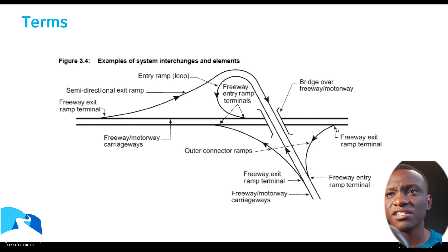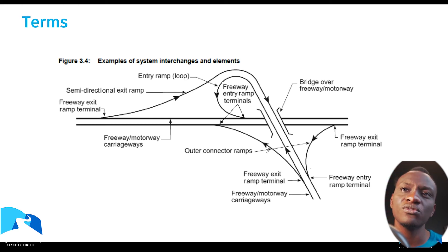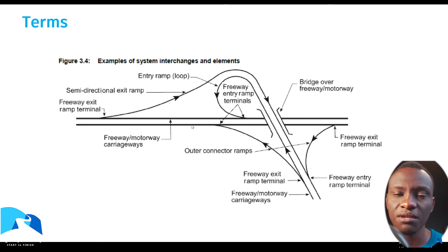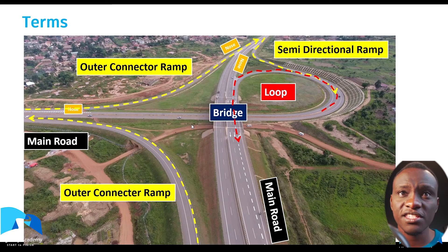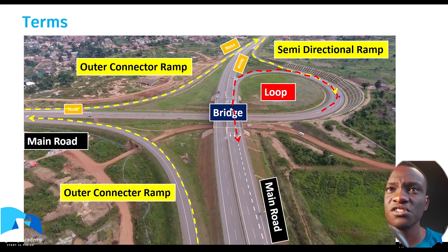We have a freeway exit ramp terminal connecting to the ramp, and then a freeway entry ramp terminal. On the other side, we have a freeway exit ramp terminal connecting to a connector ramp, and then a freeway entry ramp terminal. Just to show you on the interchange we're going to be designing — the trumpet interchange we're going to be designing — the ones in yellow are the outer connector ramps. We have the main road, those are the noses or the ramp ends. We have the bridge structure, the loop in red, and then the semi-directional ramp.